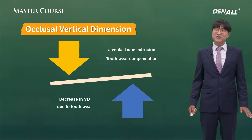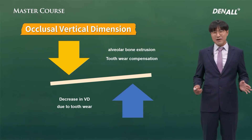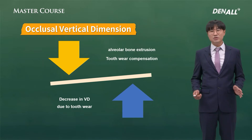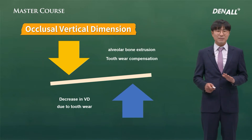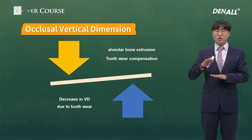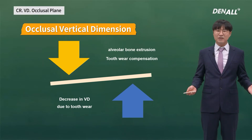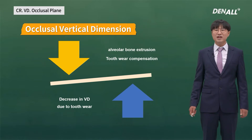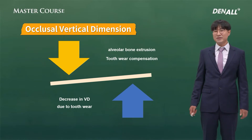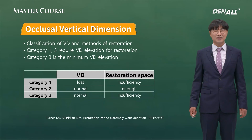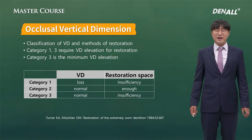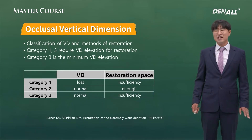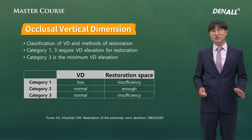Dawson, in his famous occlusion book, said that the vertical dimension decrease due to tooth wear is compensated by alveolar bone extrusion, so the vertical dimension doesn't change throughout the lifetime. I believe this is true when a patient has very healthy alveolar bone, hardly any prosthesis, and no fracture on the occlusal plane.